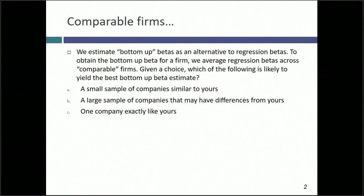This is almost a statistical question. If I ask you to estimate the beta for a company, would you rather have a small sample of companies that look just like yours — and this is for the beta calculation — or a much larger sample of companies that don't look as much like yours, but you get a larger sample?